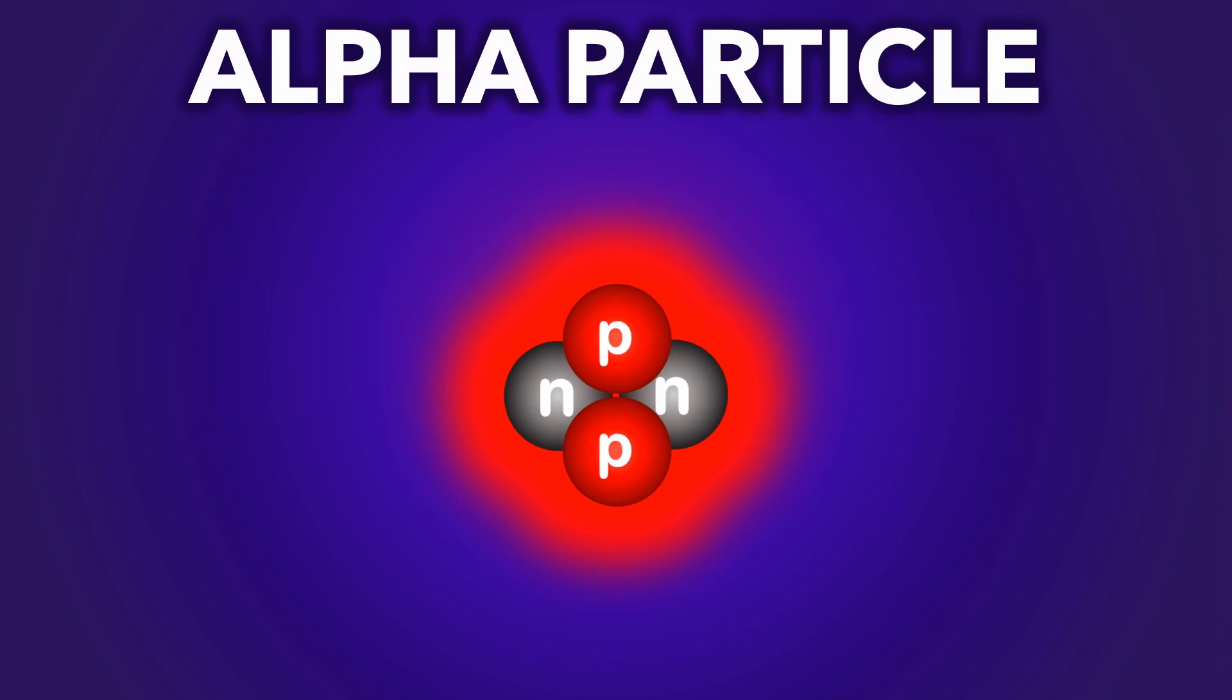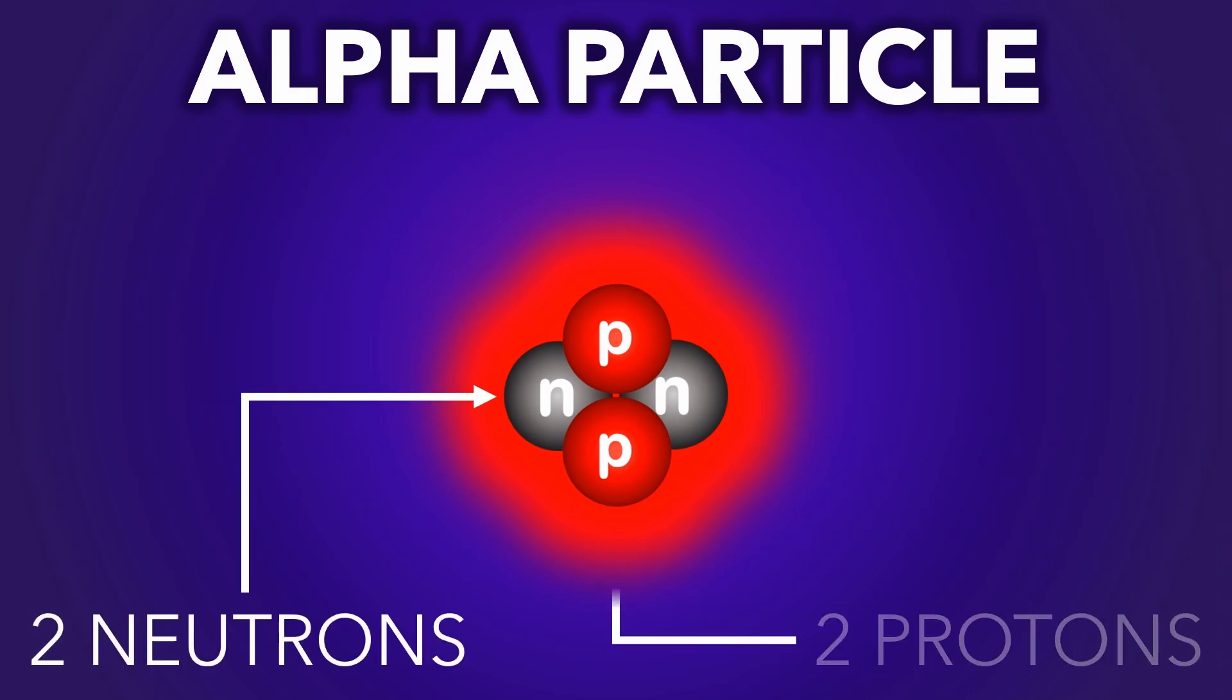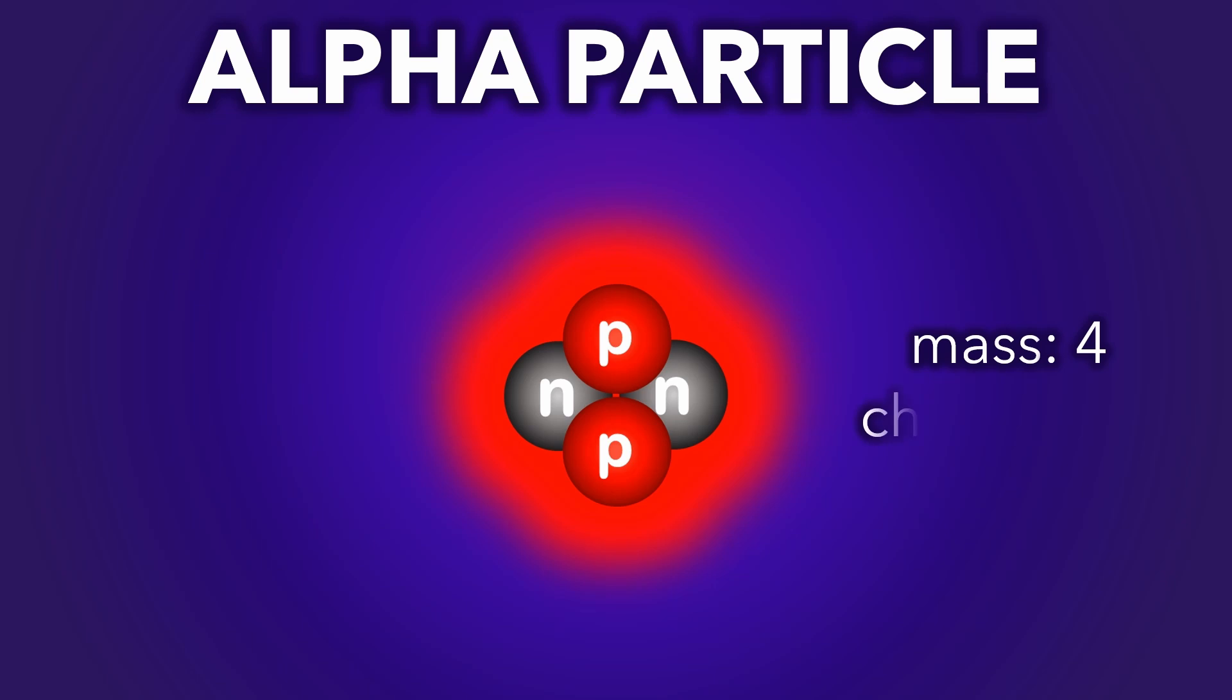Firstly, an alpha particle, made of two neutrons and two protons, basically a helium nucleus with a mass of 4 and a charge of plus 2.